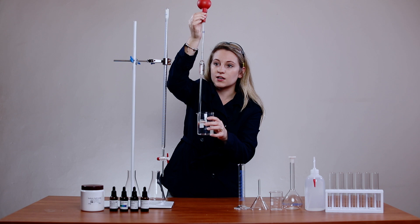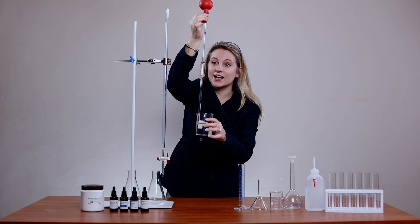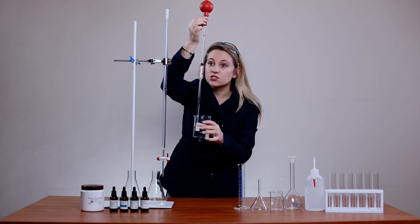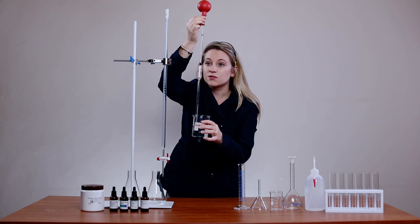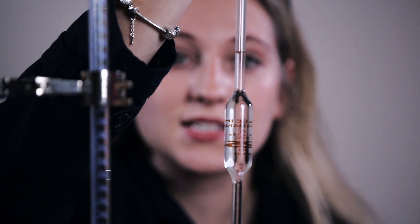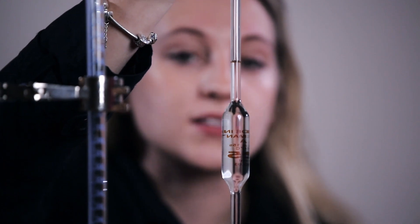This is where it gets really important because you need to make sure that the meniscus is exactly above that line. You need to check with your eye level. You can see it's not quite there so I'm just going to push it slightly until that meniscus is absolutely perfect and that's exactly 25 milliliters.